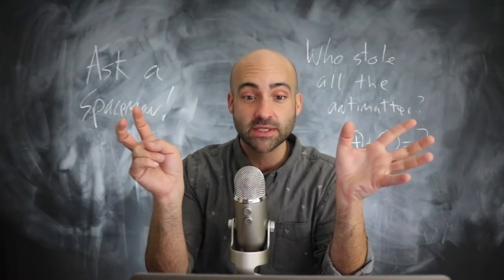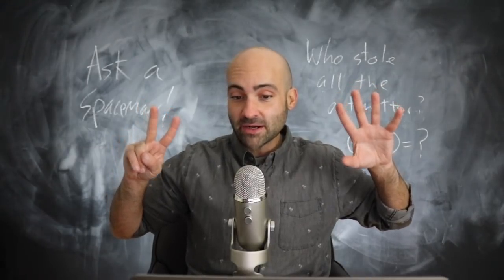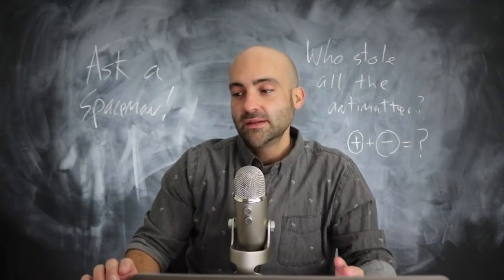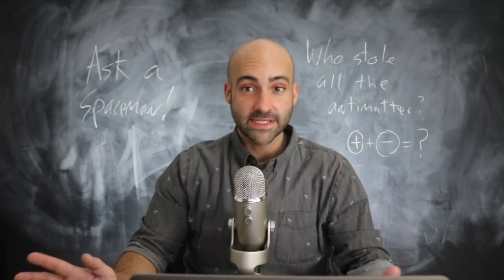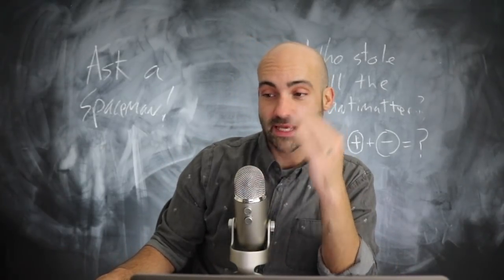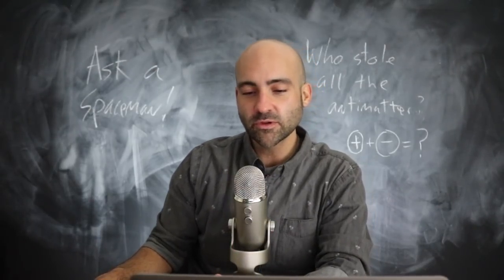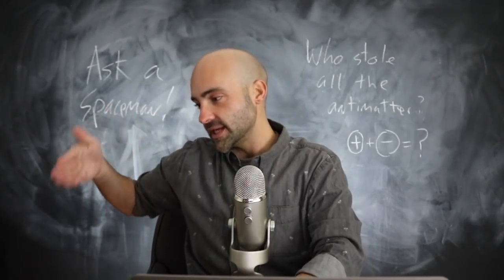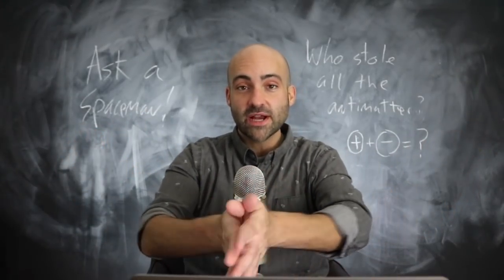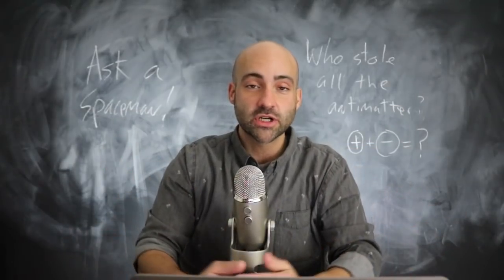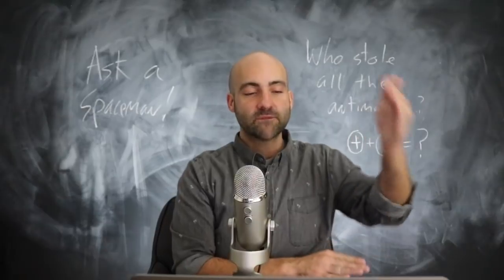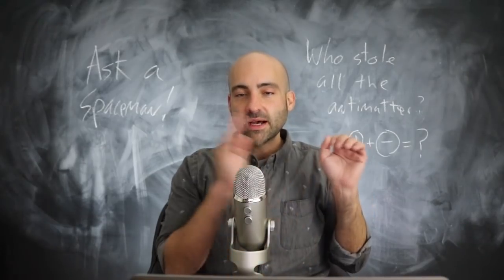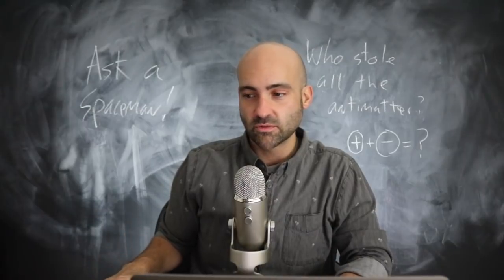So step one, if you want to produce more matter than antimatter, is to break this rule — go in with five matter and two antimatter, come out with six matter and one antimatter. But that isn't the entire game. There's another rule: electric charge is conserved. If you count up all the charges going in, the total amount of electric charge coming out will be the same.